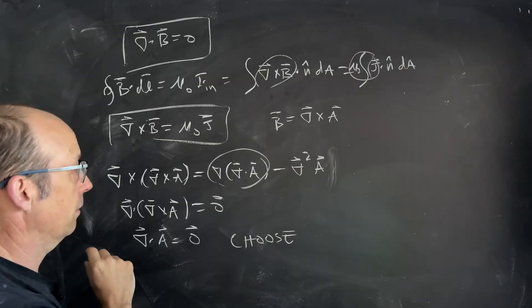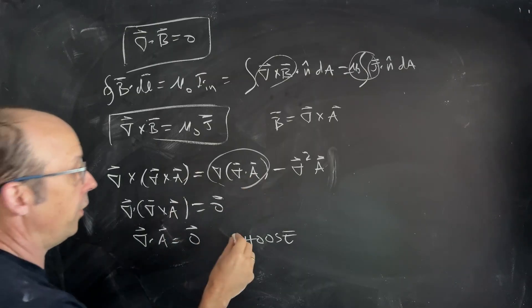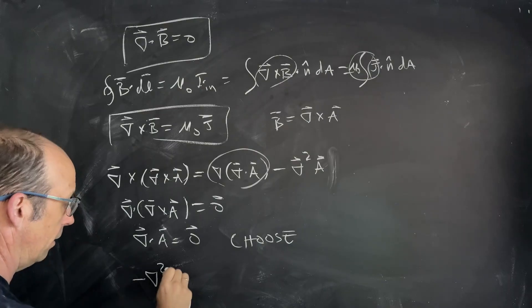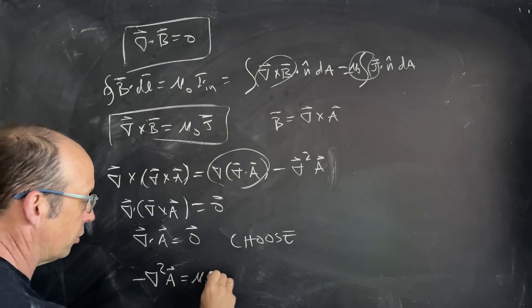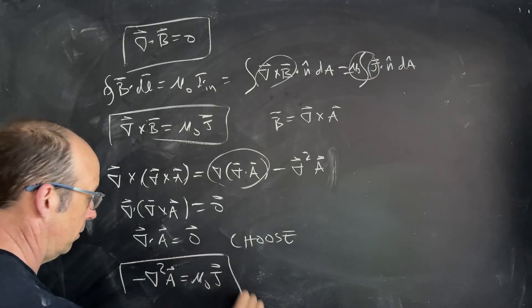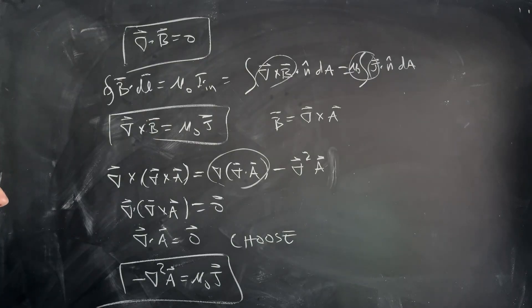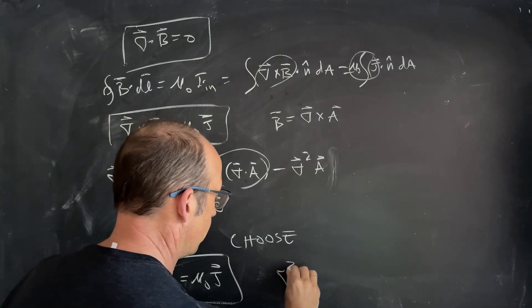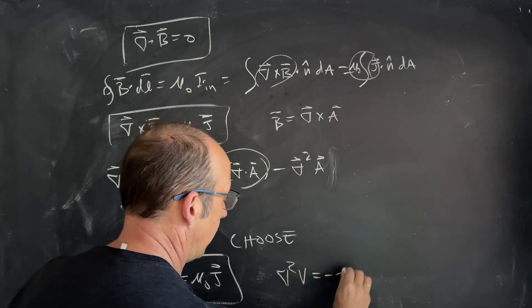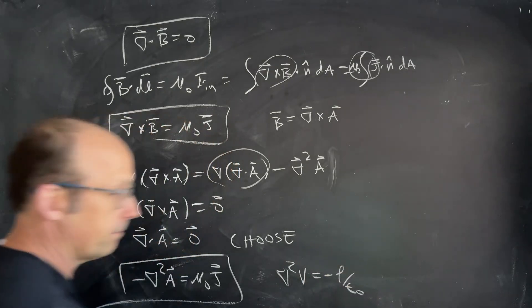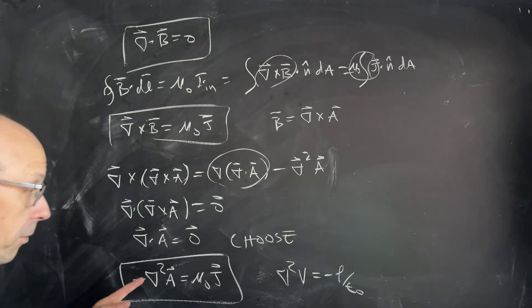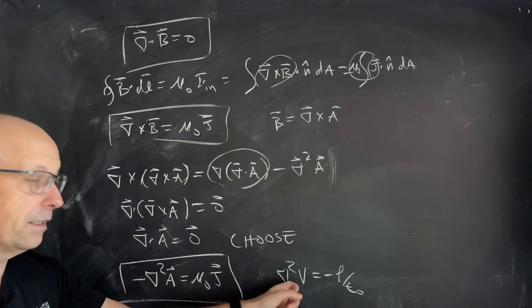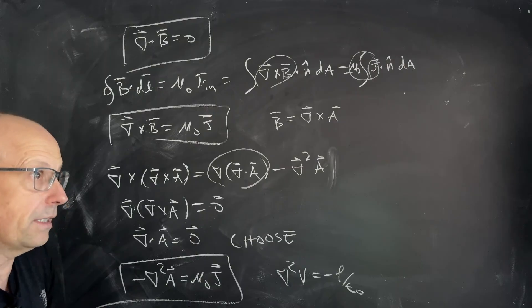And I can choose, this is important, choose Del dot A to be anything. So, I can choose this to be such that this term is zero. I can choose that. And if that's the case, I get the following very important equation. Negative Del squared A equals mu naught J. Notice that that looks a lot like what we had before, Del squared V is negative rho over epsilon naught. It's very similar. This is the vector Laplacian. We got a negative sign, negative sign. This is the scalar, but still, it's the same thing.